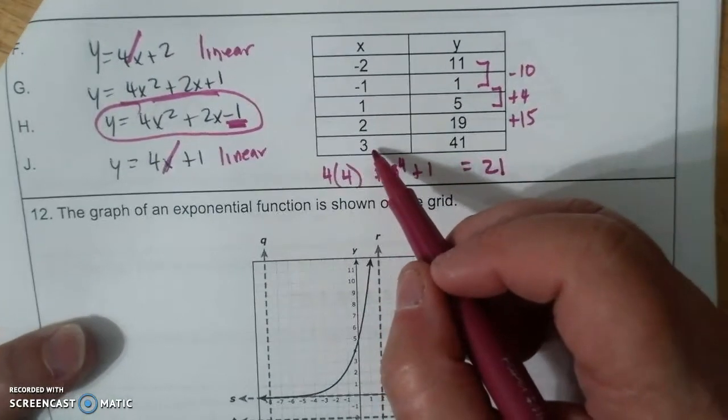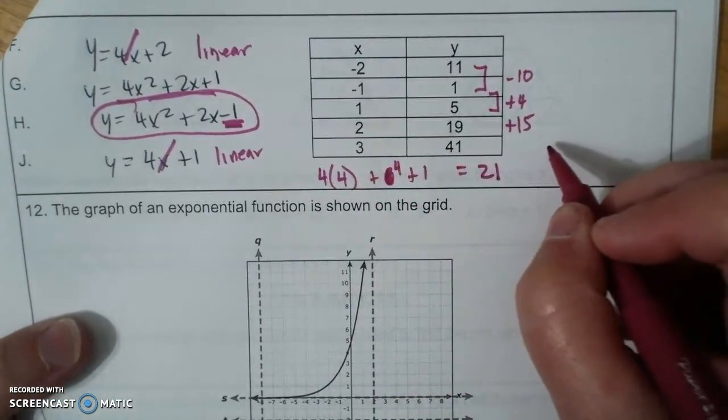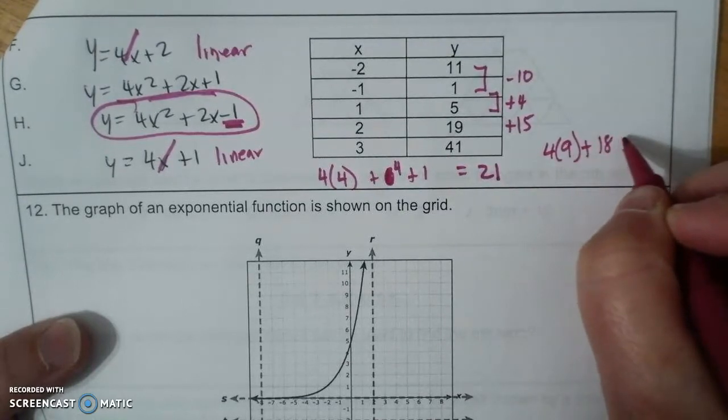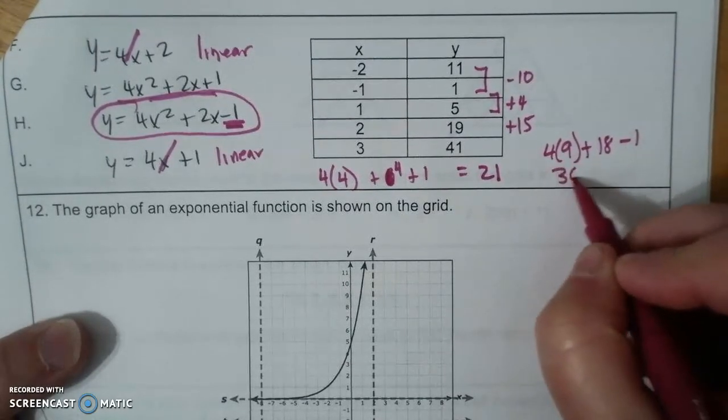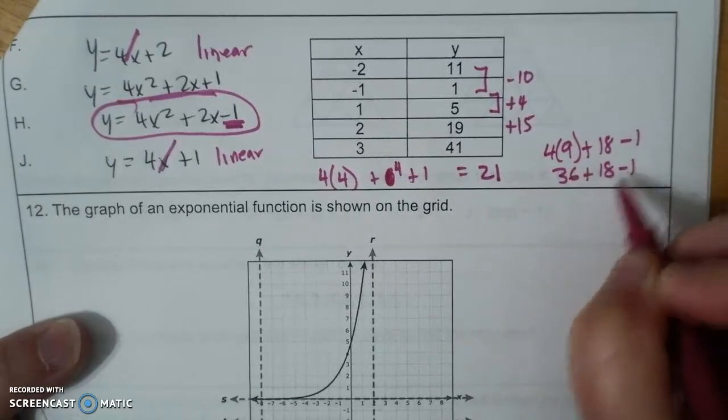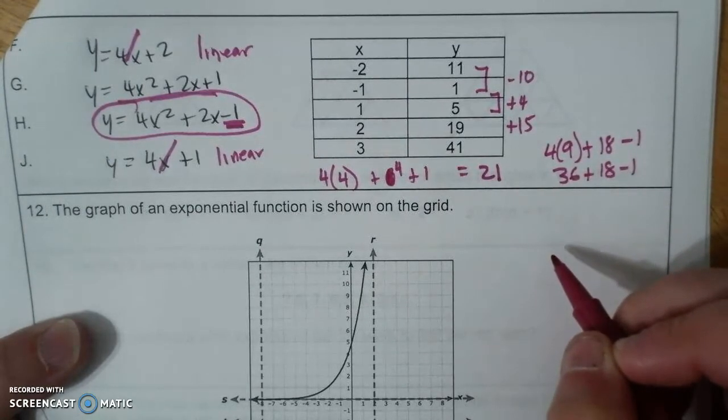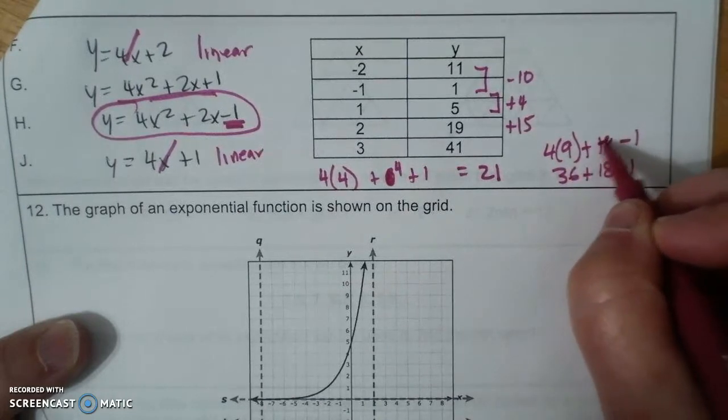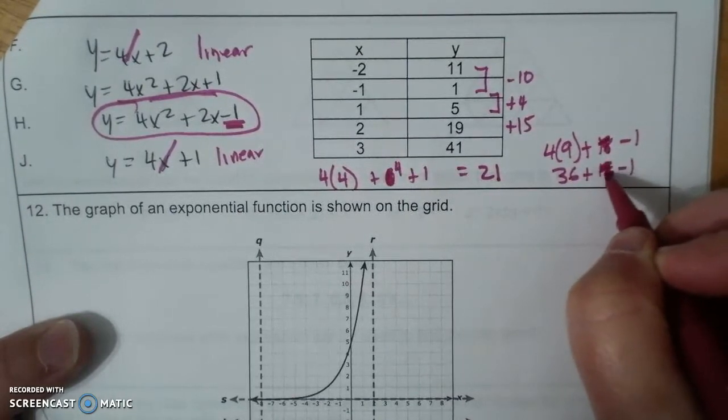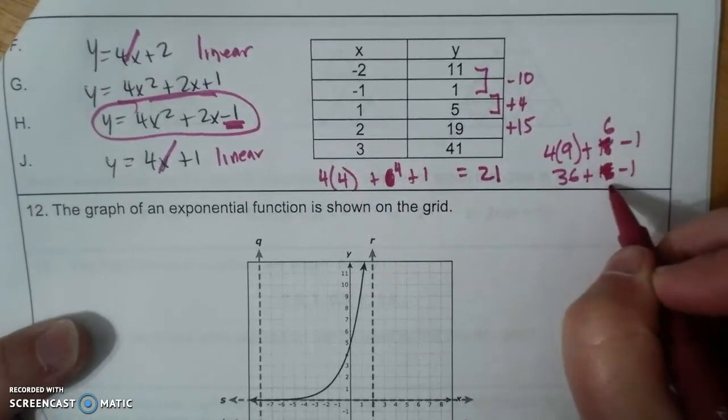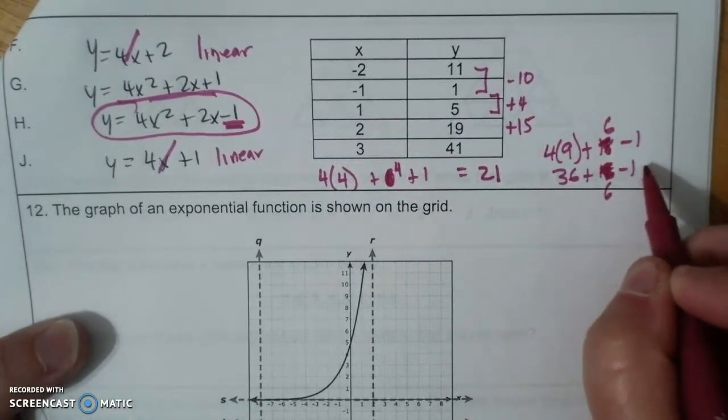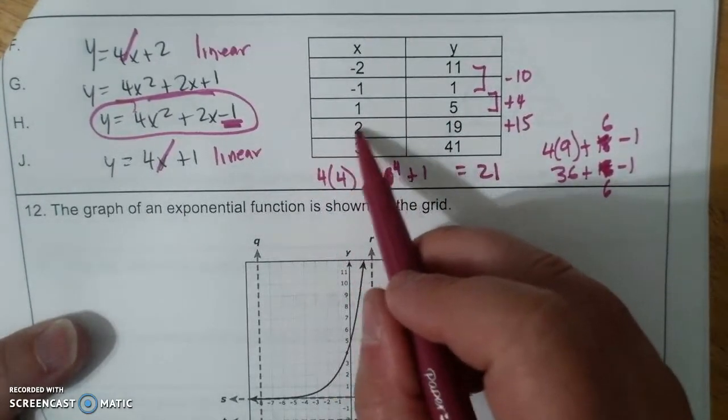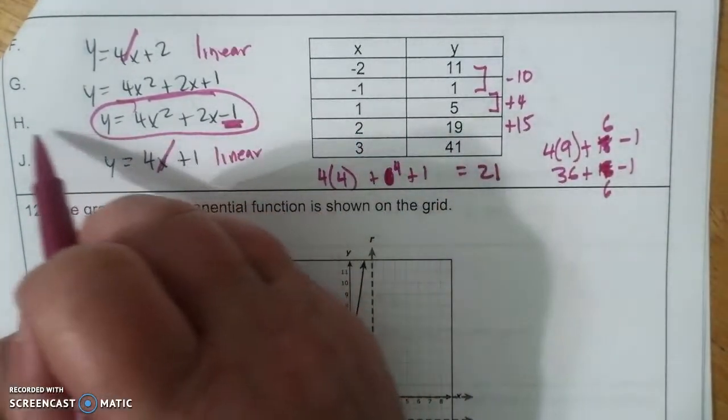So that's 4 times 9 plus 18 minus 1, 36 plus 18 minus 1. Oh did I do that right? Yeah, did it again. That's 2, that's 6, that's 6, that's 42 minus 1 is 41. So I used the positives and it worked.